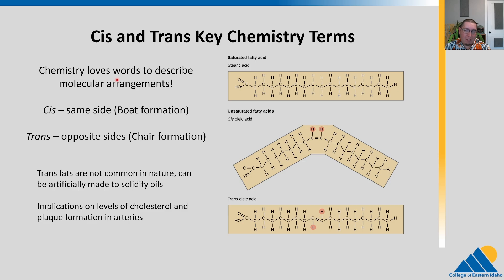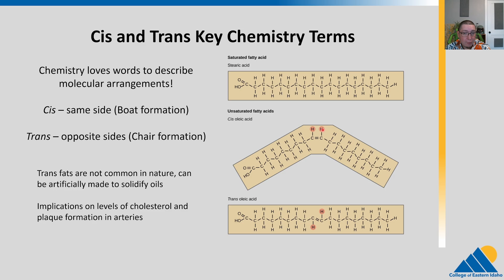You've probably heard of the evil trans fats — maybe some of you are young enough that you didn't experience the trans fat craze that happened in the early 2000s, when they went on to ban trans fats in some places. Remember we talked about the words cis and trans to describe shapes: cis is when things are on the same side, trans is on the opposite side. In unsaturated fats, there are two possibilities: the two hydrogens on the same side is a cis unsaturated fat, like cis oleic acid. If they are on opposite sides, they are trans fats, like trans oleic acid. Trans fats are actually not super common in nature; they can be made artificially.